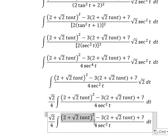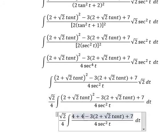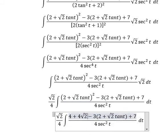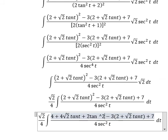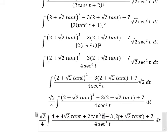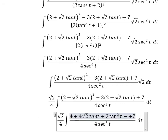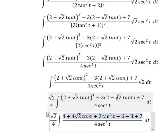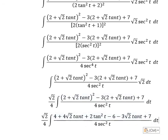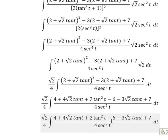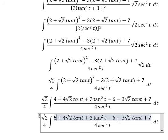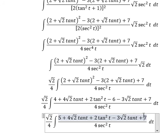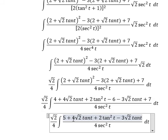We need to expand this, so we have 4 plus 4 multiplied by the square root of 2 times tan(t), plus 2·tan²(t). Then number 3 multiplied by 2 and the square root of 2. So we have negative 6 minus 3 multiplied by the square root of 2 times t. Computing the coefficients: 7, negative 6, then 4 minus 3 gives 1.